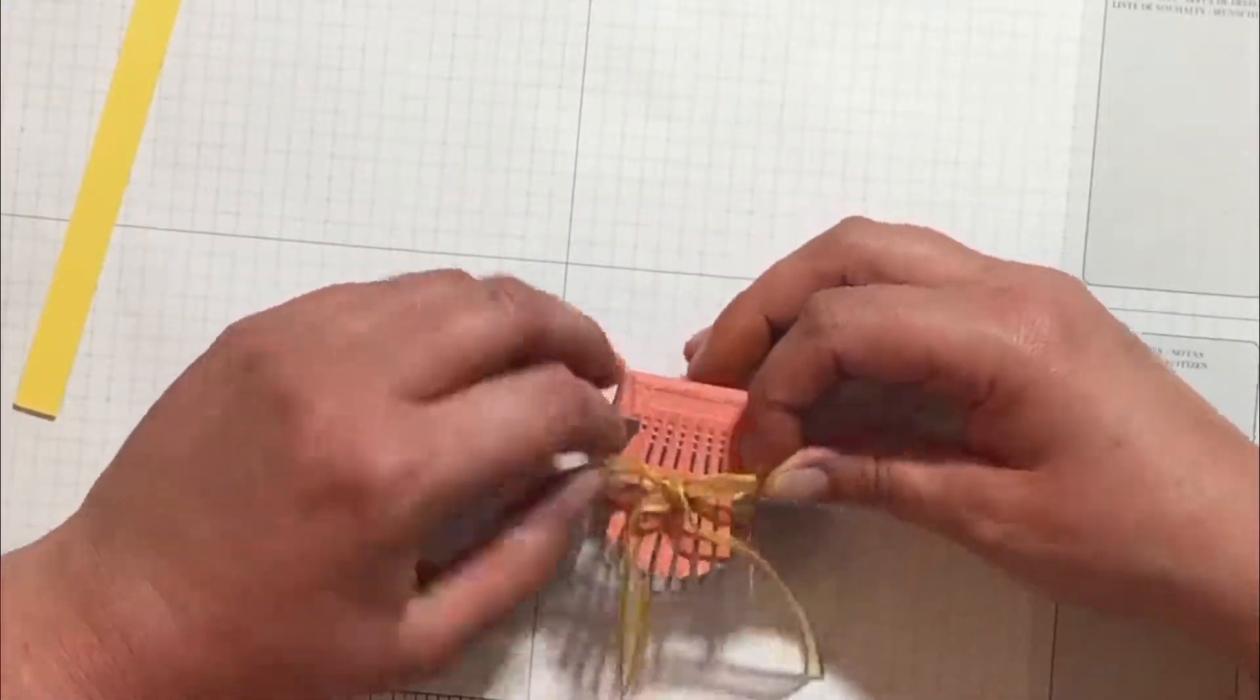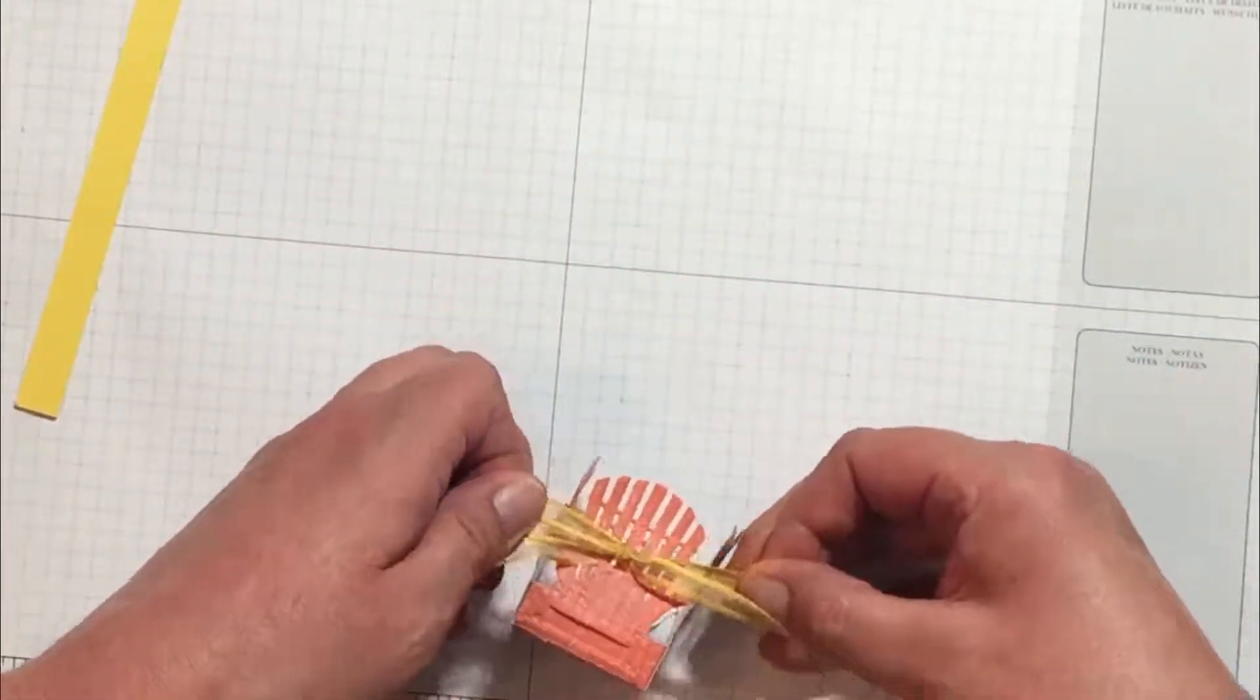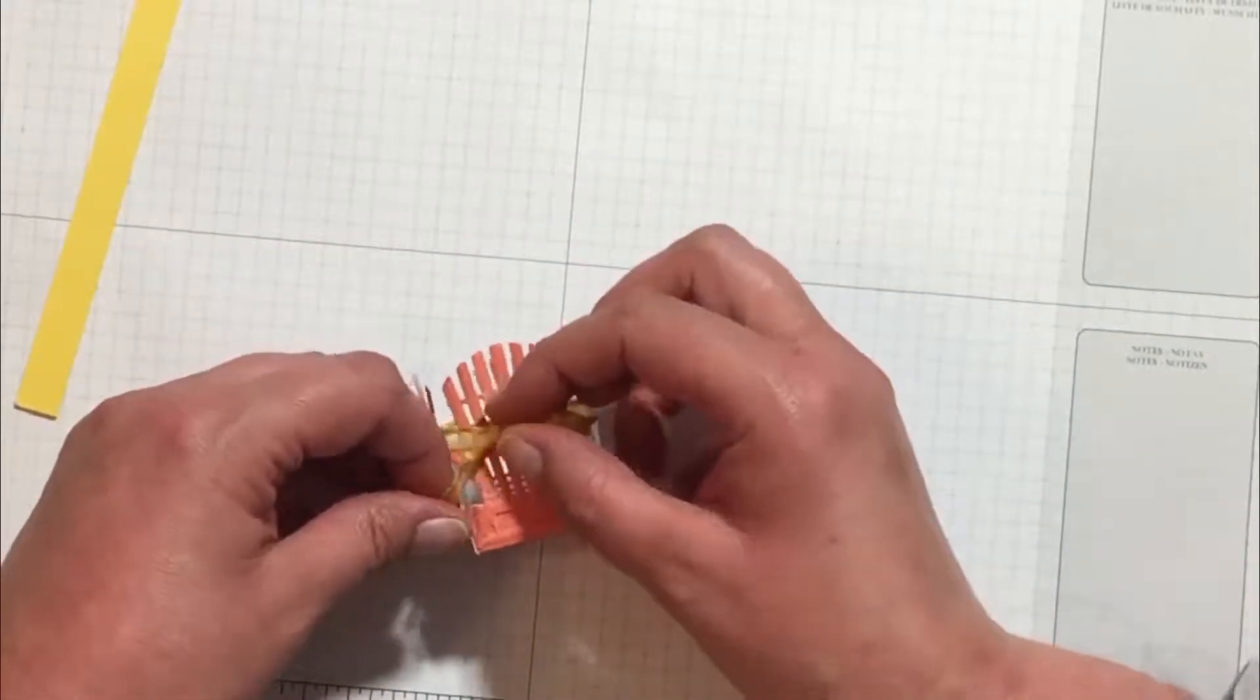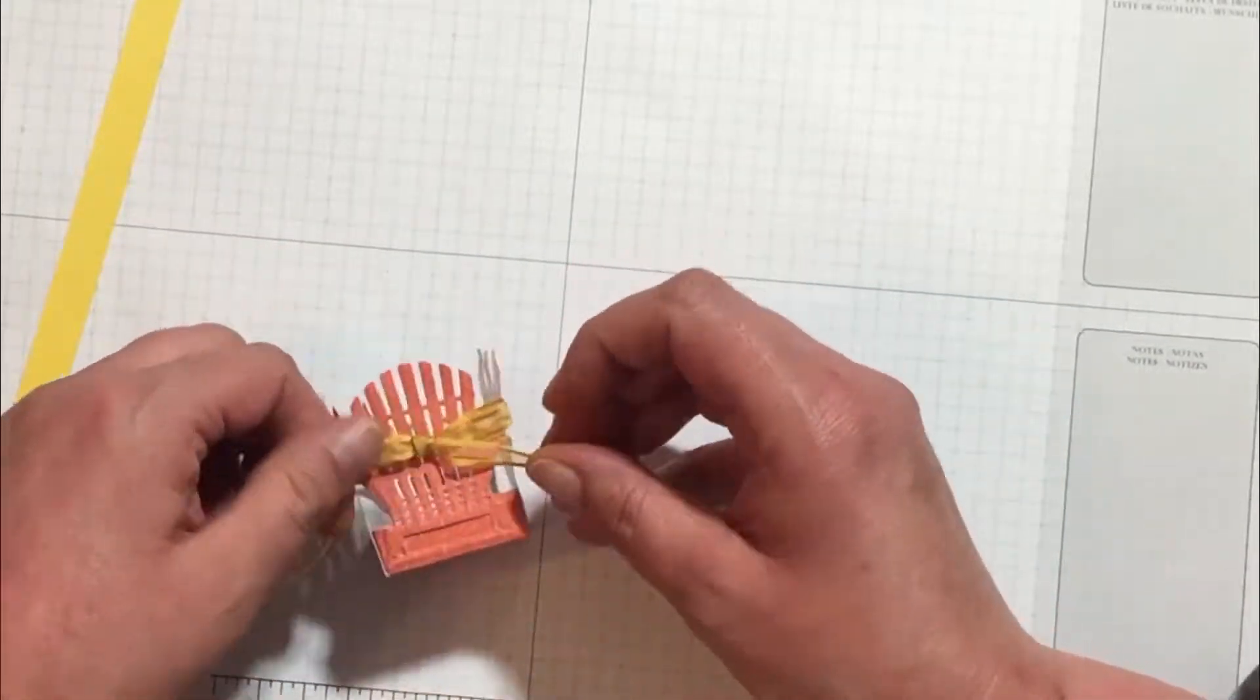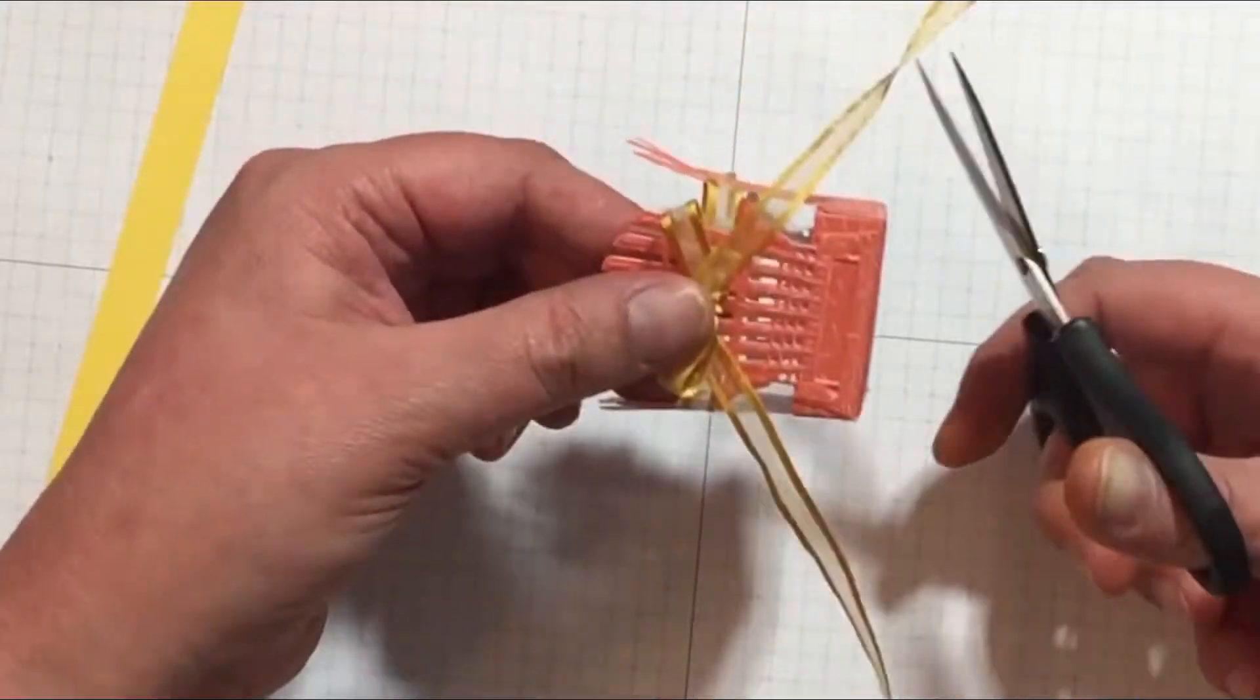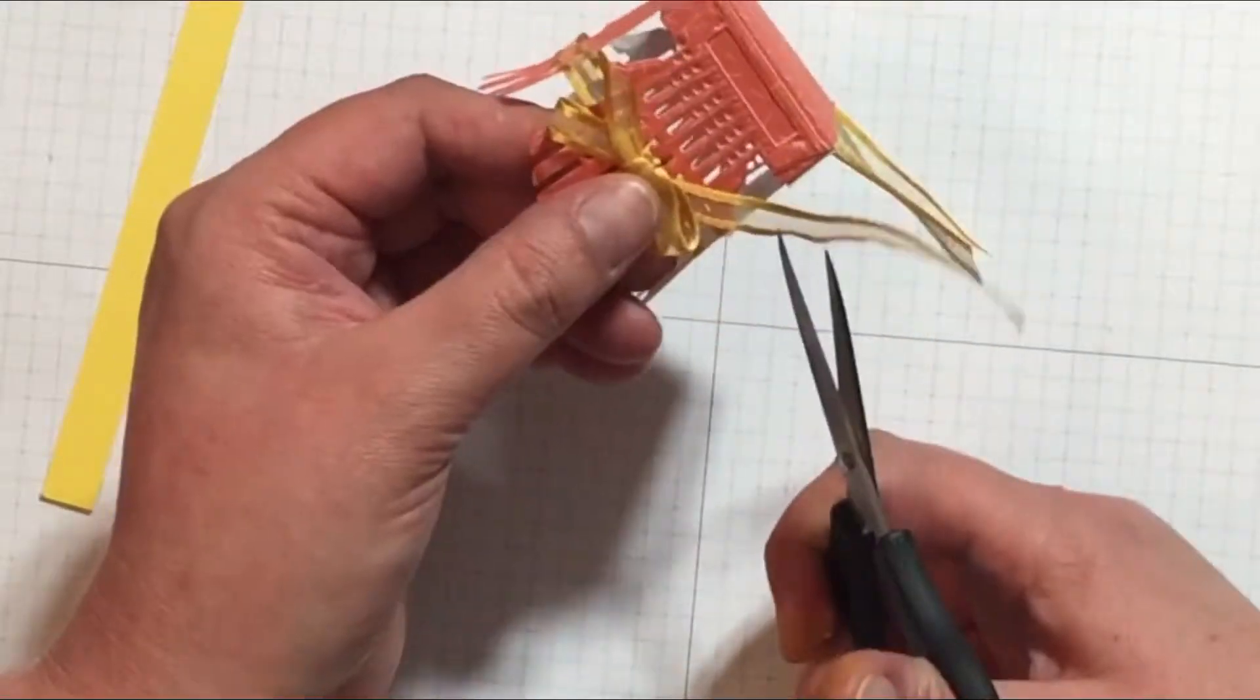Once you have the ribbon woven all the way through the basket, go ahead and just tie those two loose ends into a bow. You can see I'm tying my bow upside down. For some reason I find that when I tie my bows this way they always come out looking just a little bit nicer. Once you've got your bow tied, use some scissors to trim the ends of the ribbon so that they look a little more finished.